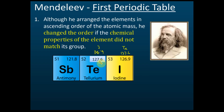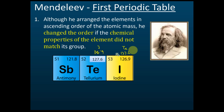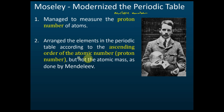Moseley solved the tellurium-iodine problem. Tellurium has a higher atomic mass than iodine, so Mendeleev placed tellurium behind iodine — but didn't know why. However, if we look at proton number, tellurium's proton number is lower than iodine's, so it should be placed before iodine. Moseley solved Mendeleev's problem by arranging elements according to ascending orders of atomic number — the proton number — not atomic mass.